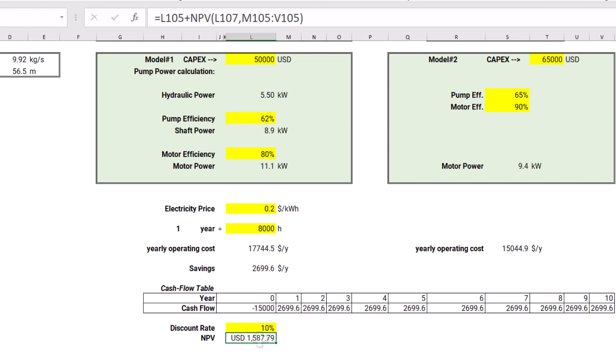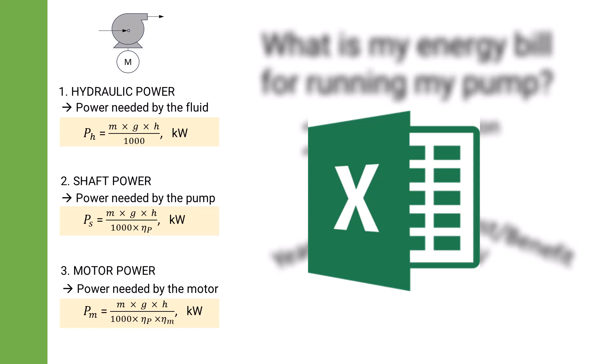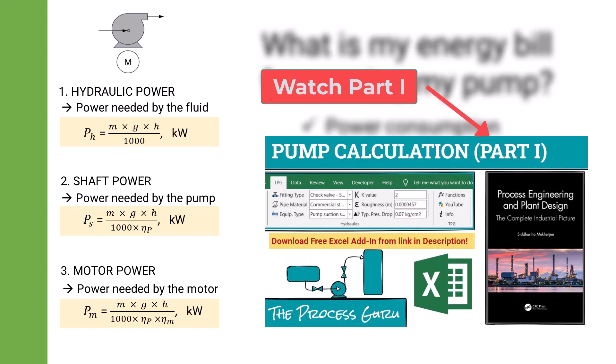You can perform this kind of quick cost-benefit analysis to make well-thought decisions about whether to go for a more expensive but efficient model. We have now reached the end of this video, covering pump power calculation and a method to assess different alternatives from a financial standpoint. You can download my Excel workbook from the link in the video description. If you haven't watched Part 1, I highly recommend it. If you liked this video, don't forget to like, comment, and subscribe. Thanks for watching.